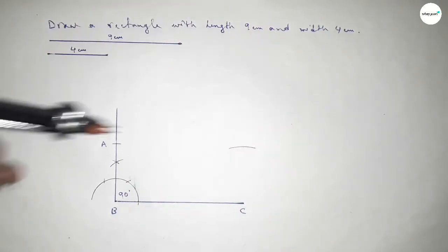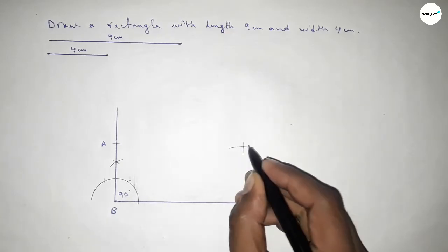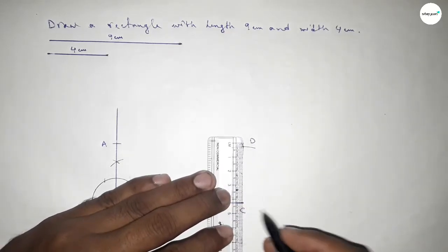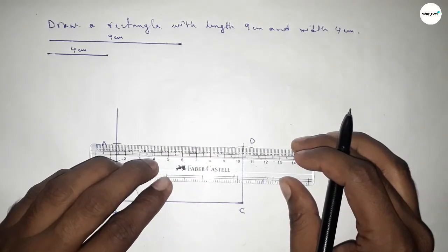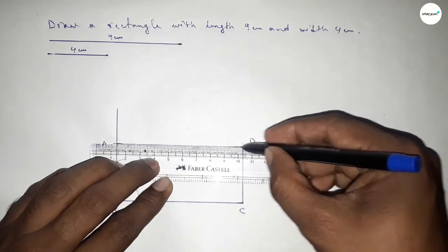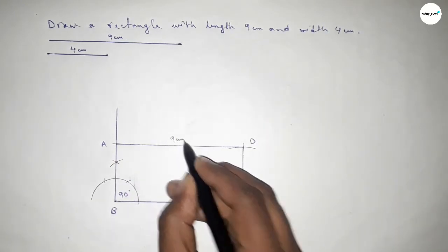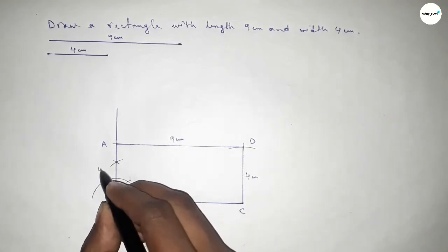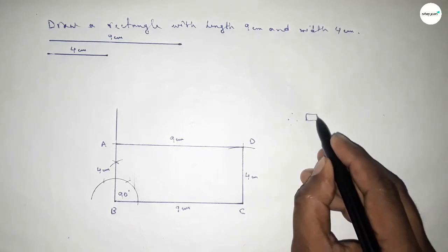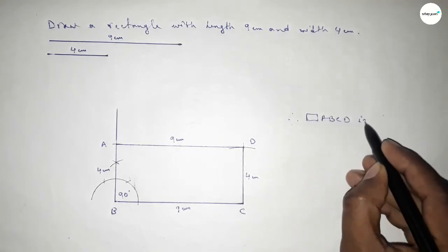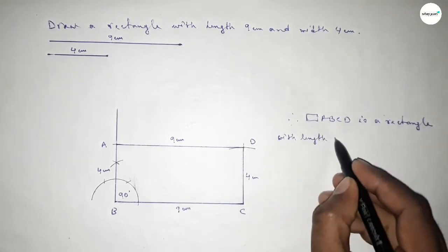Now taking the length 9 centimeter using the compass and cutting here so both curves intersect at point D. Now first joining C and D, then joining A and D to get rectangle ABCD. So this is 9 centimeter and this is 9 centimeter, and this one is 4 centimeter and this side 4 centimeter. Therefore rectangle ABCD is a rectangle with length 9 centimeter and width or breadth 4 centimeter.